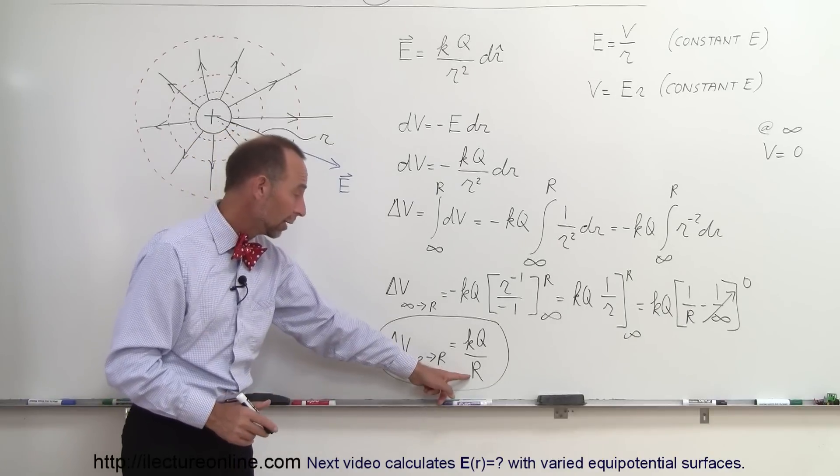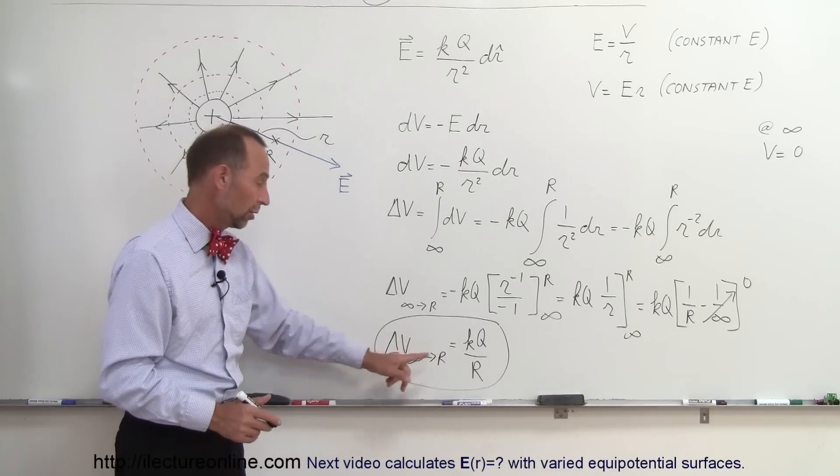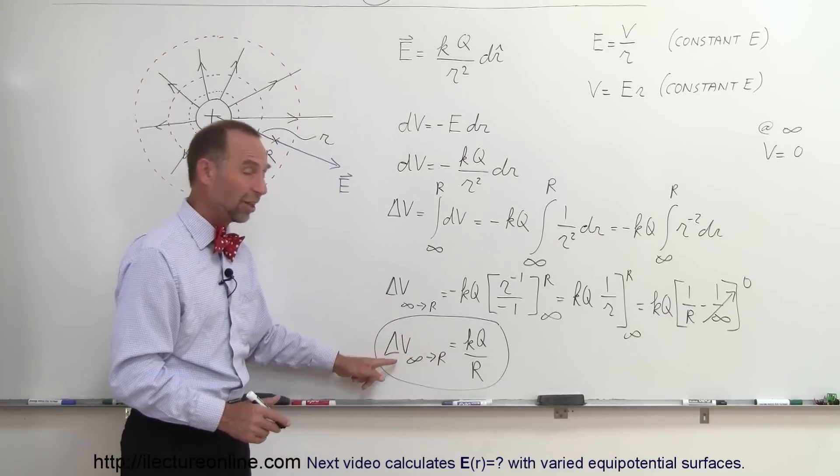For example, if we make R bigger, potential will be smaller. When we make R smaller, potential will be bigger.